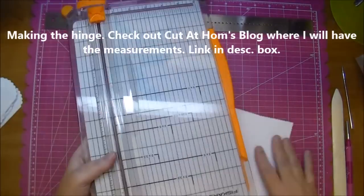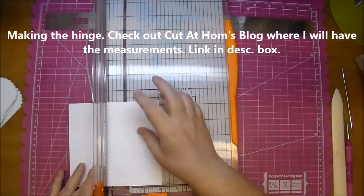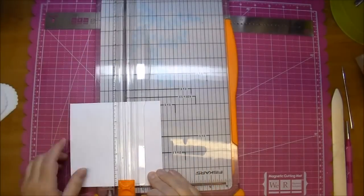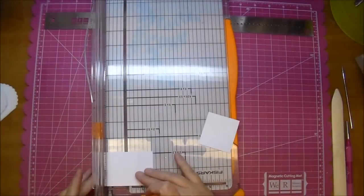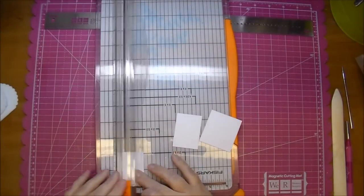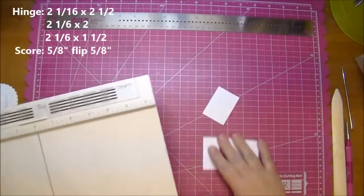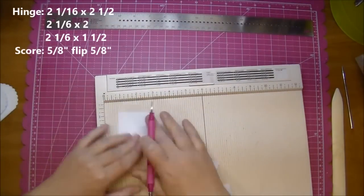So to make the hinge I'm cutting out three pieces of paper. I'm using Laura Denison's Stack the Deck binding system. And I'm cutting three pieces at 2 and 1/16th. And then the three pieces are 2 and a half, 2, and 1 and a half. And this is going to give me six hinges for my six envelope pockets.